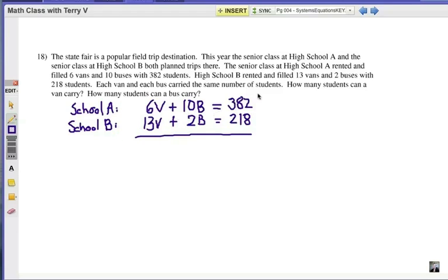This is pretty key here that each van and each bus carry the same number of students. So, that's why we know it's a multiplication there. 6V represents 6 van loads of students, and 10B is 10 buses. So, that's how we interpret that. V for vans, B for buses. Again, substitution is not going to be a great choice. Let's go with elimination. And we're going to work with the 10 and the 2 because those are a nice combination of numbers.